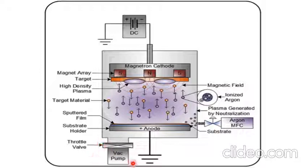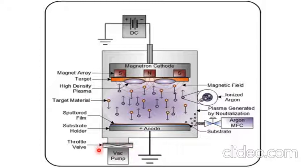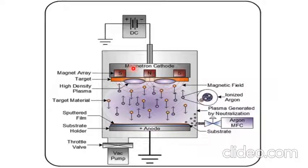Those vacuum pumping systems which create oil vapors inside the reaction chamber of the magnetron sputtering instrument are avoided. The vacuum pump connected to the magnetron sputtering instrument creates a vacuum of around 10 to the power of minus 6 Torr inside the reaction chamber.